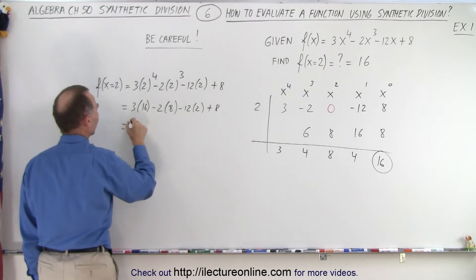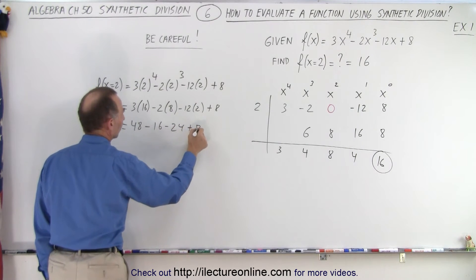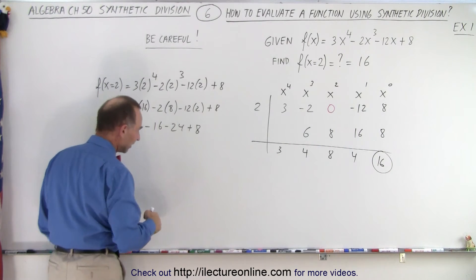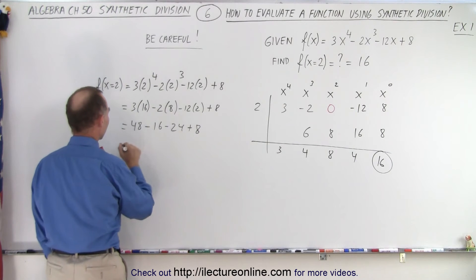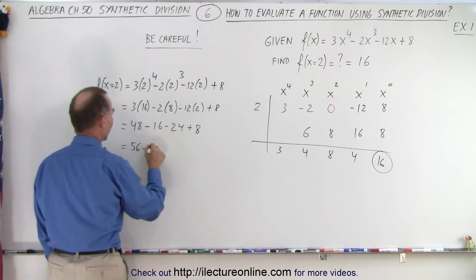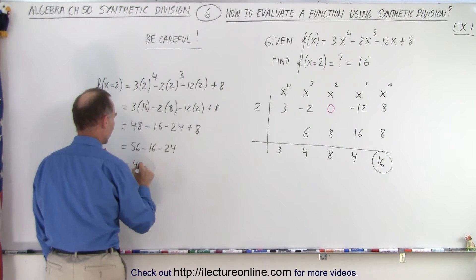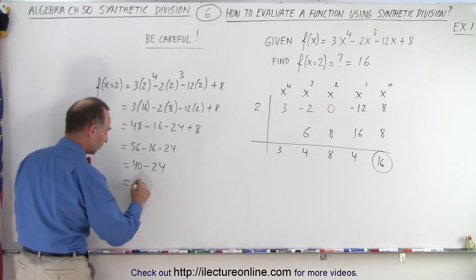So now we work this out. This is 48 minus 16 minus 24 plus 8. So 48 minus 16, that would be 32 minus 24. See, that's just complicated, isn't it? Well, let's see here. 48 plus 8, that's 56 minus 16 minus 24. 56 minus 16 is 40 minus 24. And 40 minus 24, that's equal to 16.